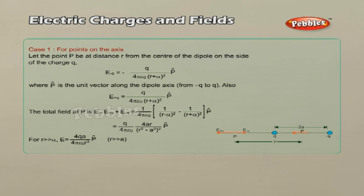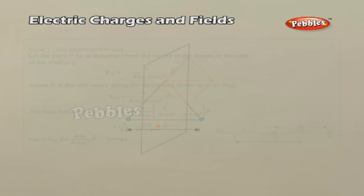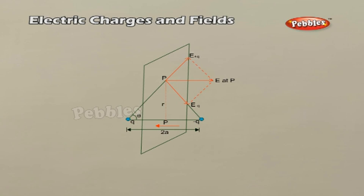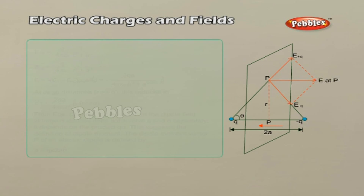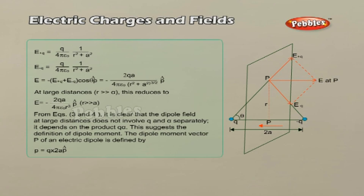The magnitudes of the electric fields due to the two charges +Q and -Q are given by equations 1 and 2 and are equal. The components normal to the dipole axis cancel away, while the components along the dipole axis add up. The total electric field is opposite to the dipole moment direction P, and the resulting equation is derived accordingly.